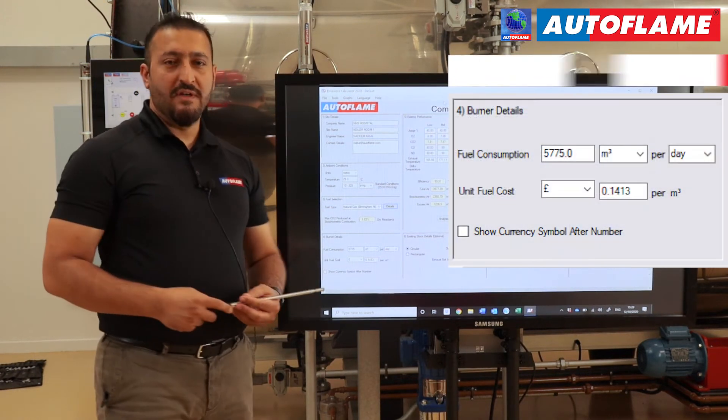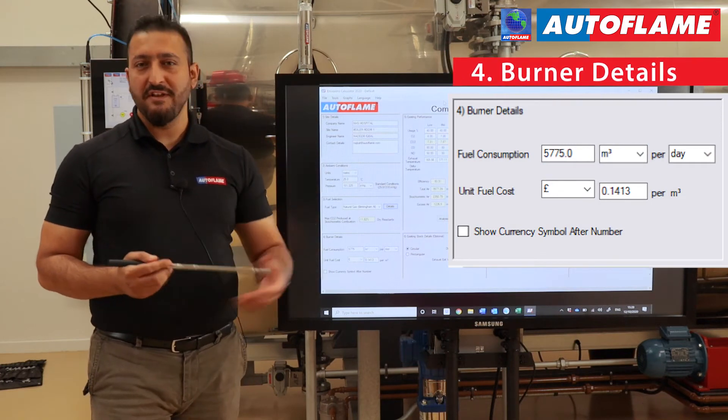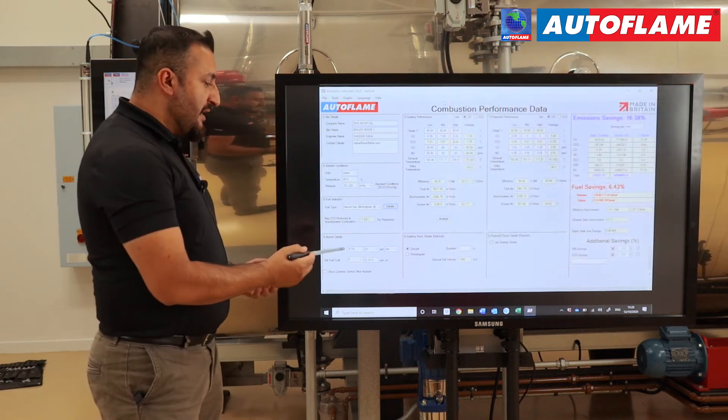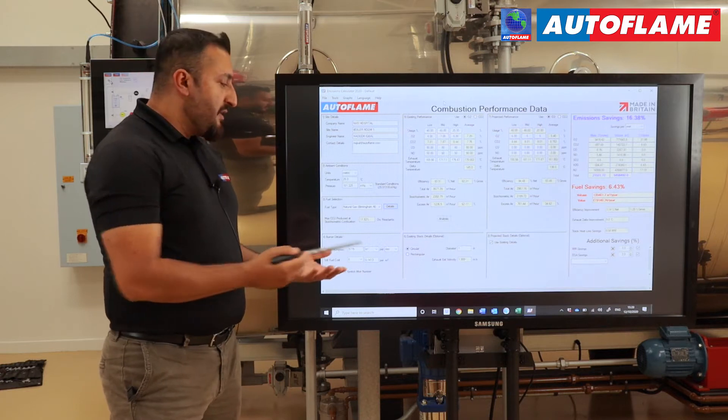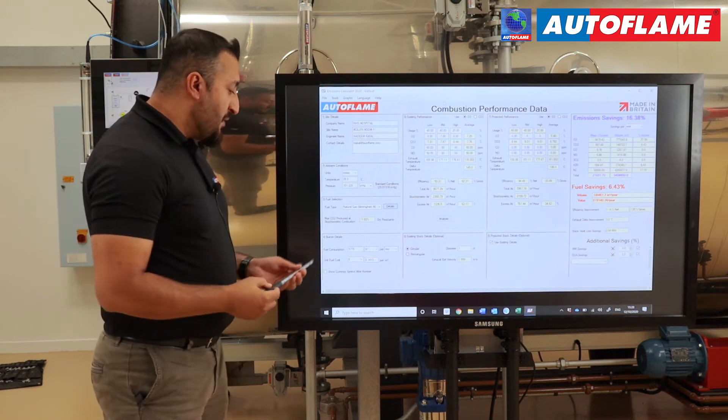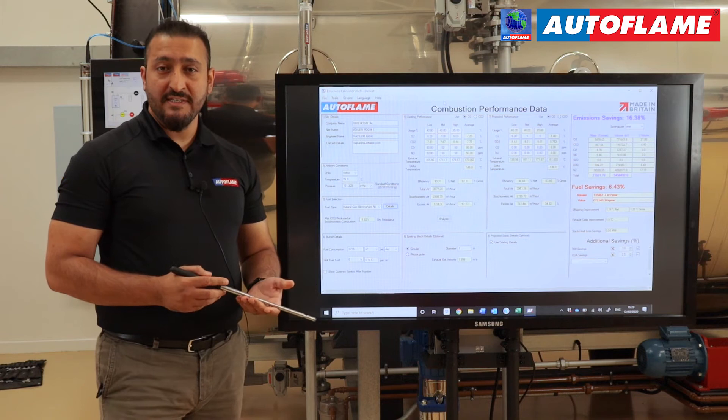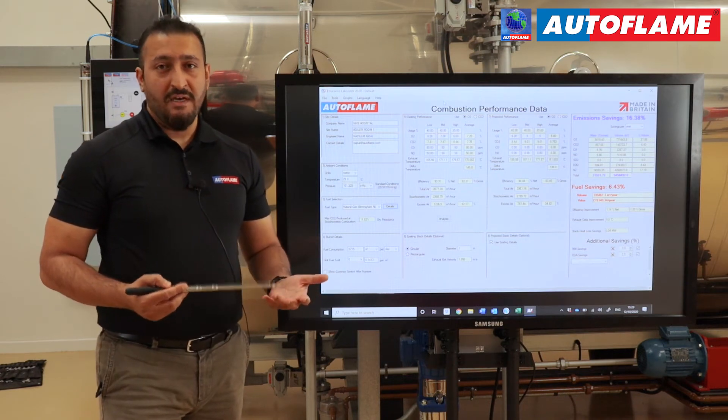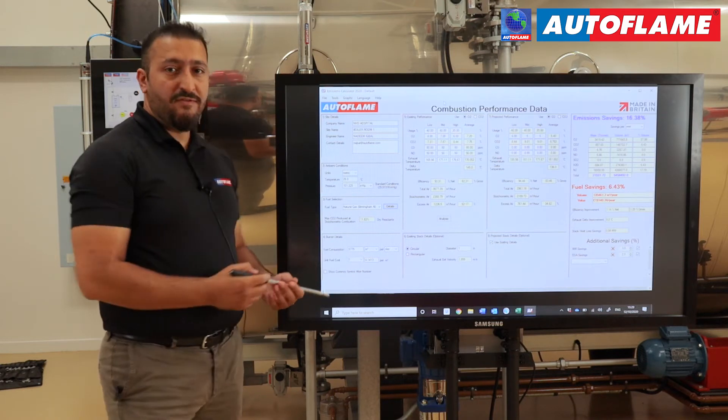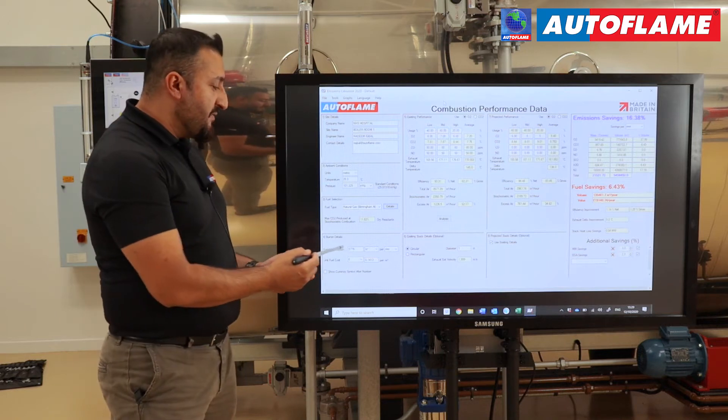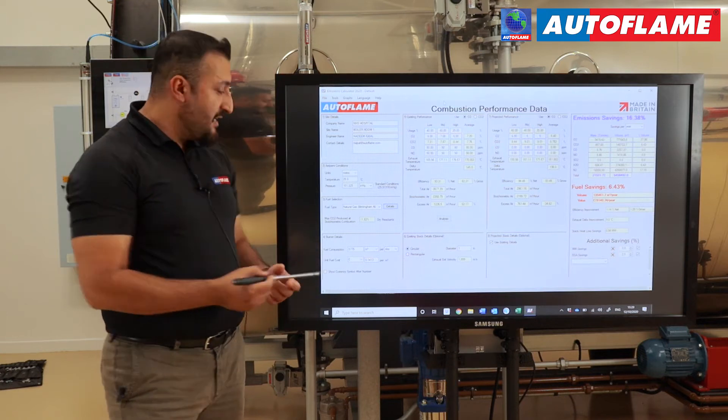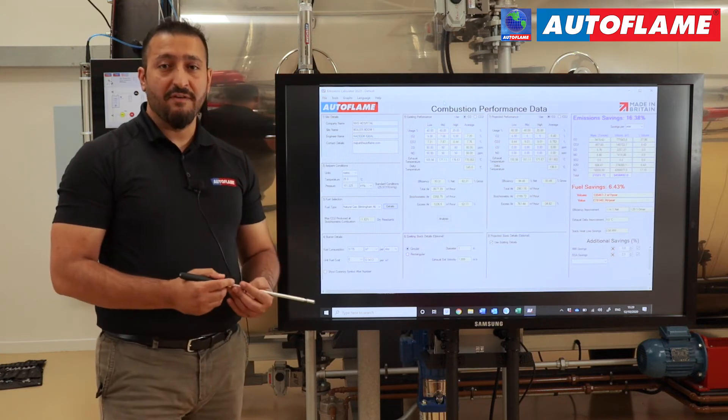In section four, we put the fuel consumption data. This information either our engineer from the site can provide us, or the end users can actually provide this information to you. We can get the consumption data either per hour, per day, per quarter, per month, or per year. We can then add the relative currency if it's US dollars, pounds, euros, or any other currency that you would like to add and calculate in, and then the relative cost of the fuel per unit. In this case, we're using cubic meters per hour, and the fuel data which has been given by Declan is 5,775 cubic meters per hour.